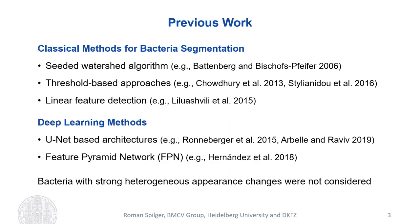In previous work, classical methods for bacterial segmentation based on the seeded watershed algorithm and threshold-based approaches have been introduced. Also an approach based on linear feature detection was introduced. Deep learning methods have been introduced for cell segmentation. The U-Net and the feature pyramid network were introduced and applied to HeLa cells. A convolutional long short-term memory was combined with the U-Net to take into account temporal information for segmentation of HeLa cells. A ConvNet was used to distinguish between bacteria and non-bacterial objects in microscopy images. However, bacteria with strong heterogeneous changes of appearance were not considered.